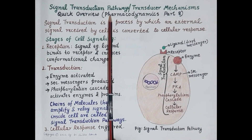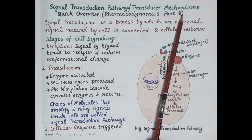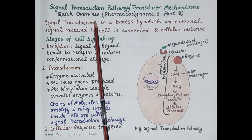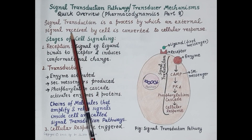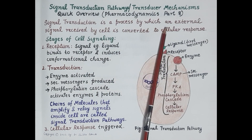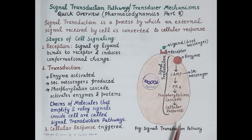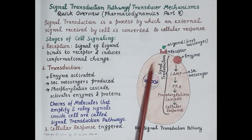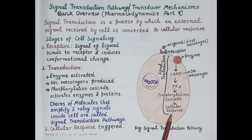Hello students. In today's video we are going to understand in brief the entire concept of signal transduction pathways or transducer mechanisms — a quick overview of the entire concept. This is video eight in the series on pharmacodynamics. Signal transduction is a process by which an external signal received by the cell, communicated by a ligand which can be an endogenous substance or a drug, is converted to a cellular response.